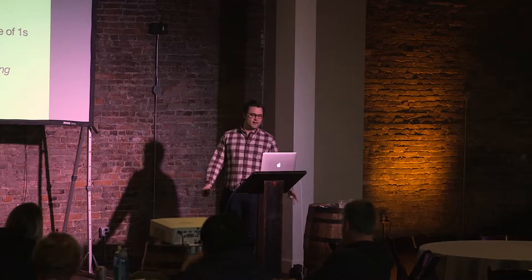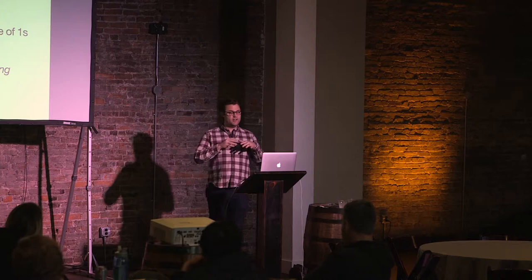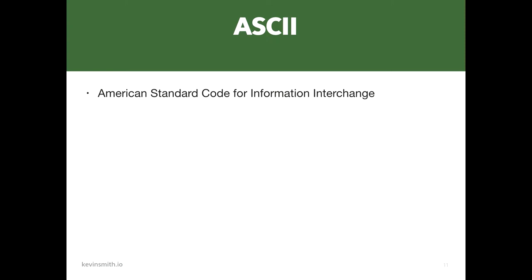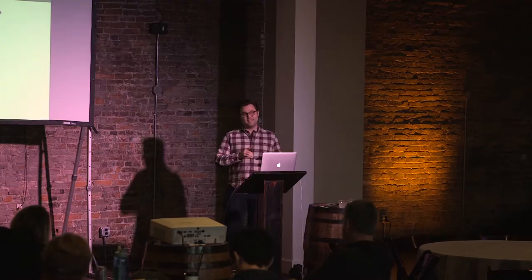The ones and zeros really have no meaning on their own. We need to use character encodings to give those ones and zeros meaning, to allow us to read it in human-readable form. ASCII is the first widespread encoding that really gained prominence and is actually still in use. It stands for American Standard Code for Information Interchange, and it was developed in the U.S. in the 1960s.